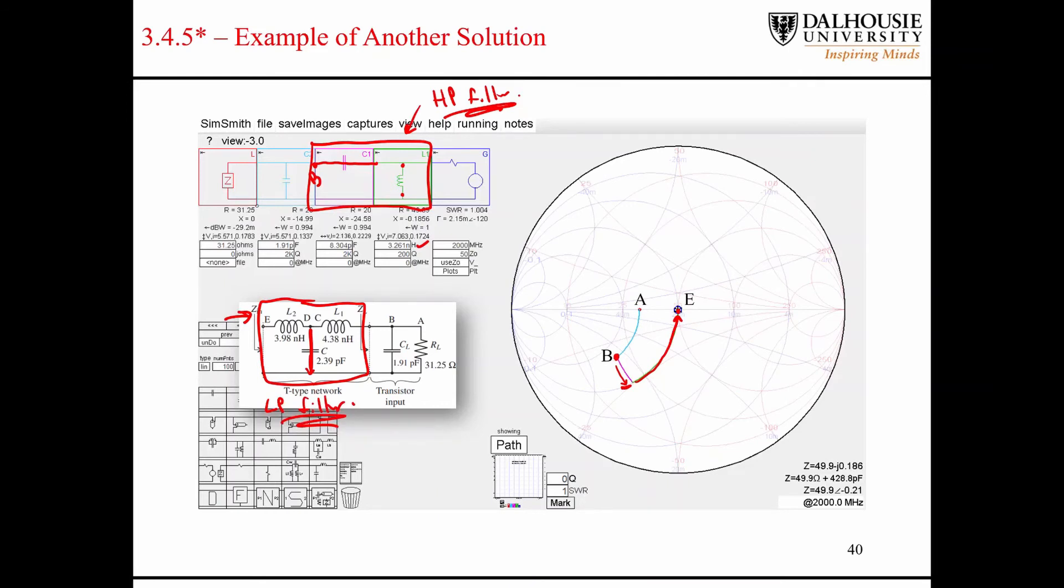Depending on the application, we might want a low-pass filter versus a high-pass filter or vice versa. These are the kind of factors that we take into consideration when choosing what type of network we want to go with. If we know there's going to be a lot of high-frequency noise in our system, then maybe using the T network is more ideal.